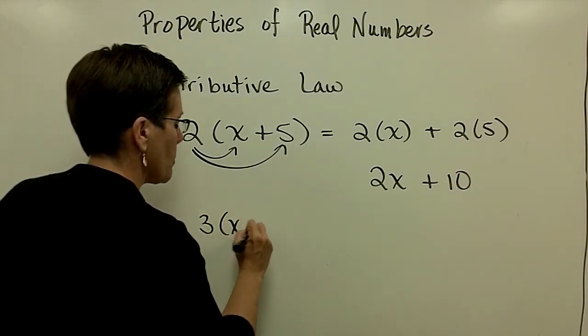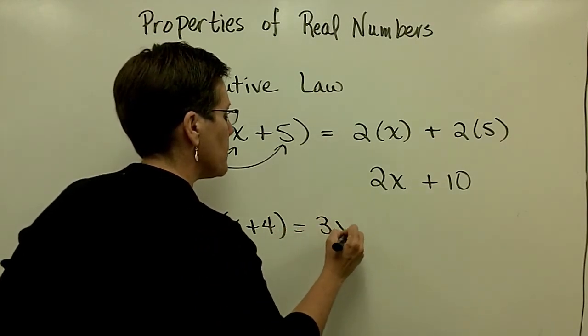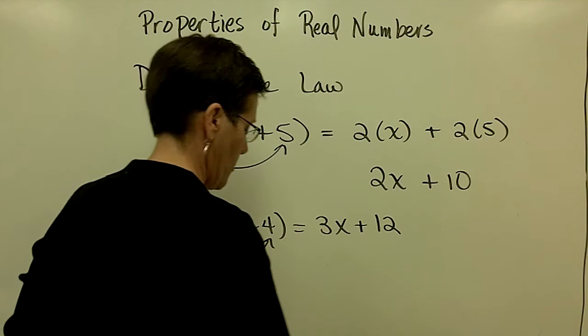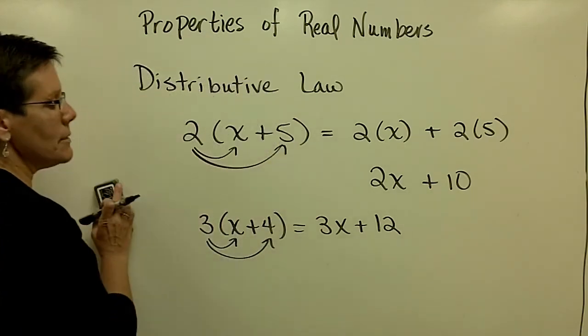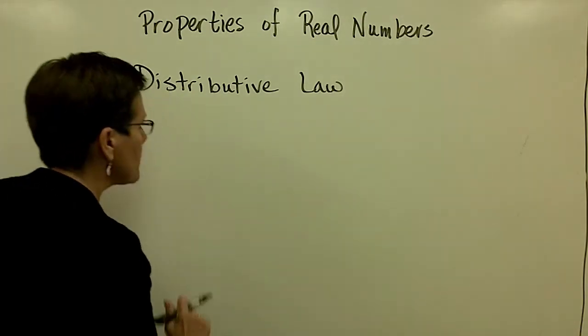Another example, 3 times x plus 4 would give me 3x plus, 3 times 4 is 12. If I had a minus sign, let's just do one more.